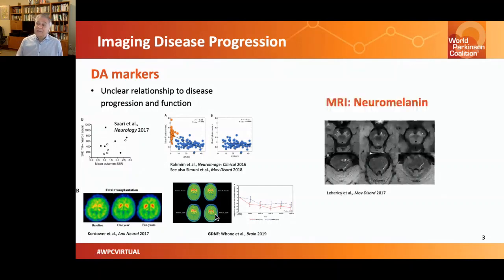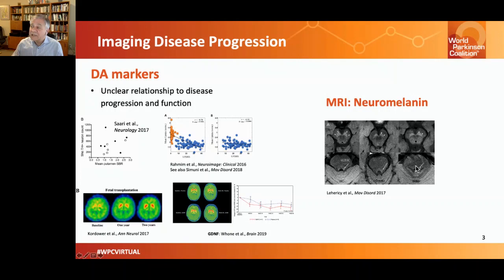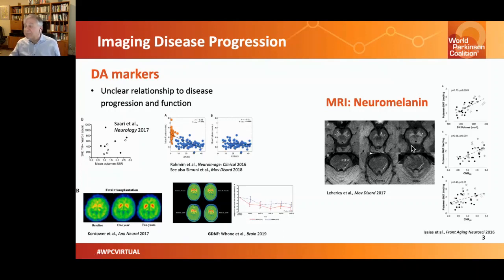Another MRI marker that has been used is neuromelanin, which is deposited in the dopamine cells in the midbrain and also in the noradrenergic cells in the locus coeruleus. If you compare healthy versus Parkinson's with REM sleep behavior disorder, you can see a marked reduction. You also see that reduction in people who have REM behavior disorder but have not yet developed Parkinson's, suggesting this may be a good early marker. It also seems to correlate with dopaminergic imaging markers in the brain.